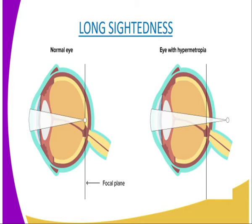Long-sightedness is caused by too short an eyeball or a weak lens system. The disorder can be corrected by wearing convex or converging lenses. This lens refracts light rays before reaching the eye lens, thereby enhancing refraction in order to focus sharply on the retina.